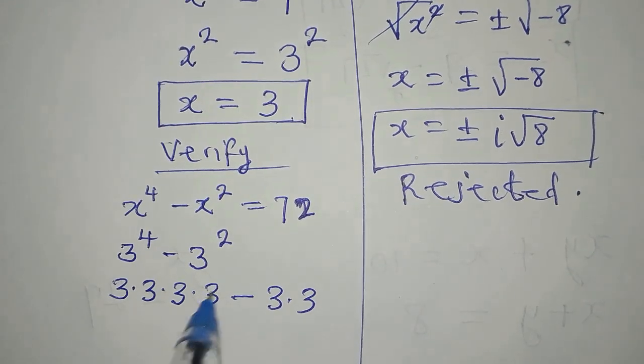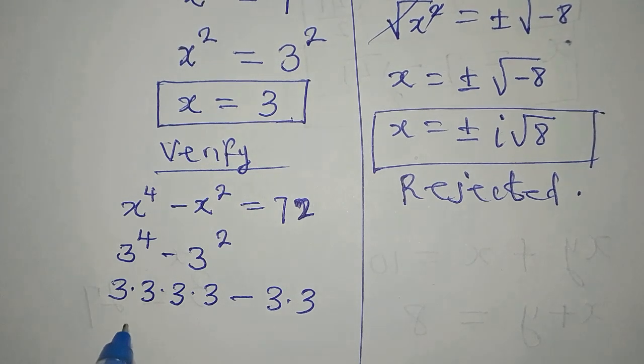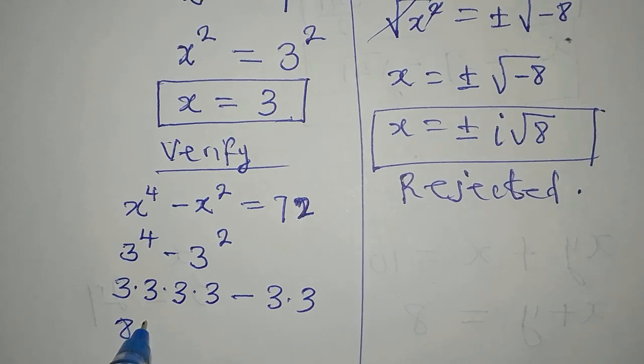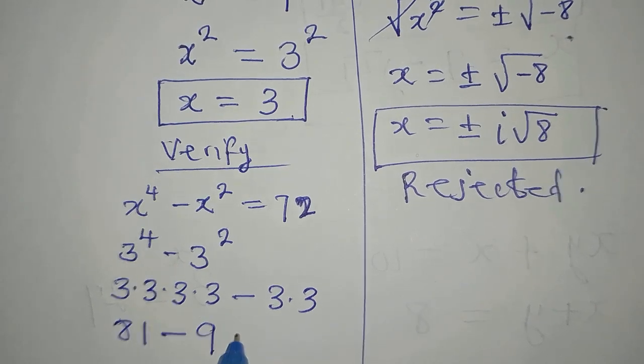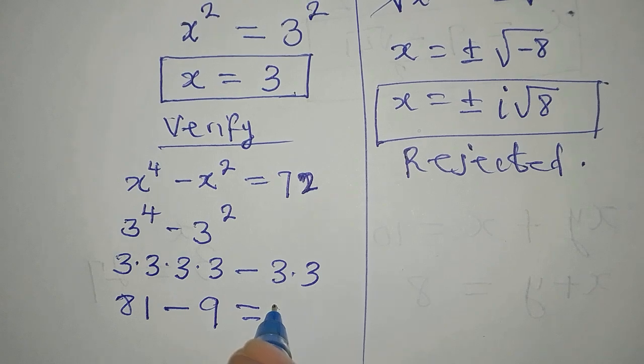Now, can I cancel this and this? Not possible, right? So we have to multiply before we subtract. 3 times 3 times 3 times 3 is 81. Minus 3 times 3 is 9. And 81 minus 9 will give us 72.